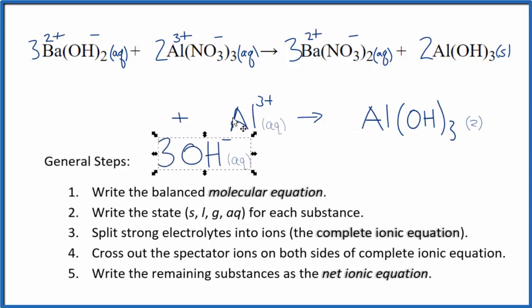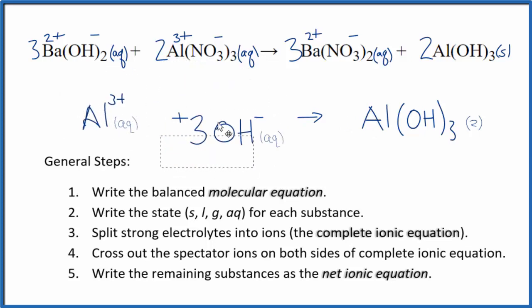You'll also see the positive put first, followed by the negative. It doesn't really matter. Maybe it looks a little bit nicer. And that's the net ionic equation for Ba(OH)2 plus Al(NO3)3.